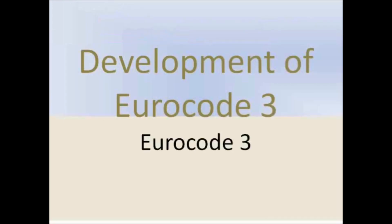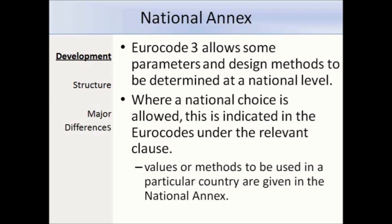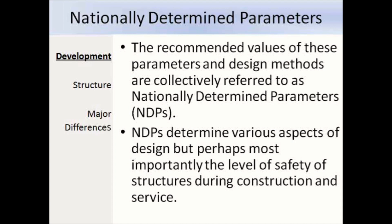The first thing I'll talk about is the development of Eurocode 3. The aim of the Eurocodes in general is to provide a harmonised set of design rules for use throughout Europe — a common structure or language — but to also be flexible enough to allow each country to make certain choices on parameter values or methods used in certain situations. The Eurocode can make allowances for national choice through the use of the National Annex, and in the UK you'll sometimes see notes that tell us to refer to the UK National Annex instead of using the values or methods given in the core Eurocode document. The recommended values and methods determined by each country are referred to as Nationally Determined Parameters, or NDPs for short, and these determine aspects of the design relating to the construction and serviceability of the structure.